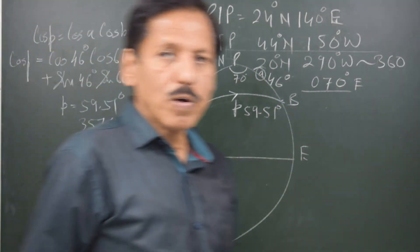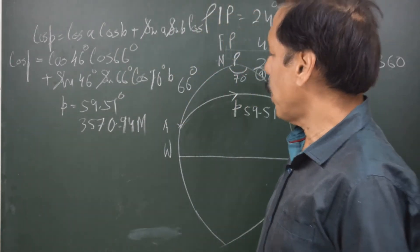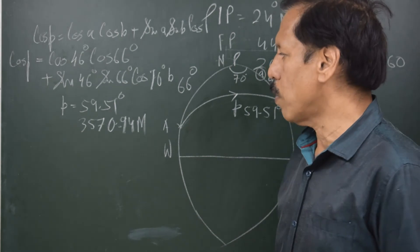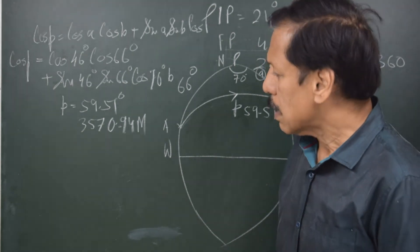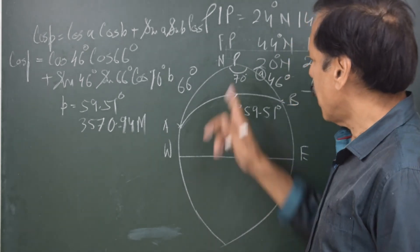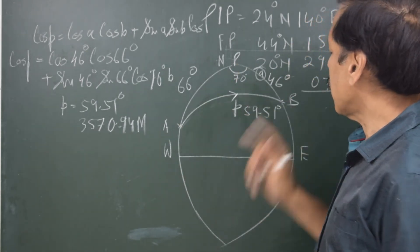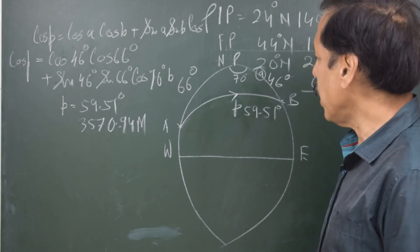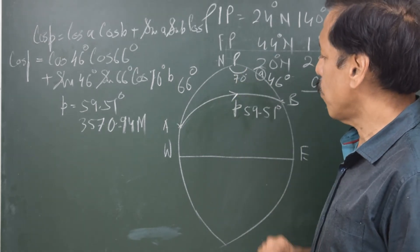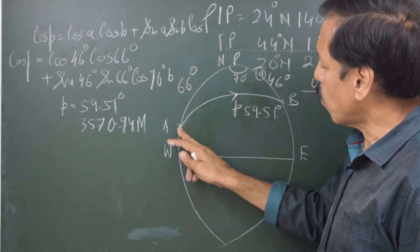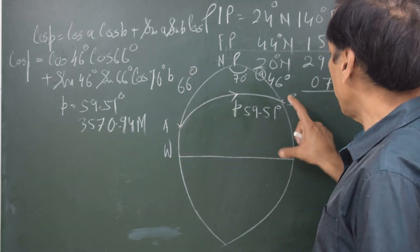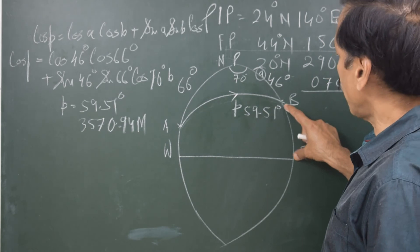We have obtained the great circle distance between places A and B. Small p equals 59.51 degrees, which equals 3570.94 nautical miles. We applied the cosine formula to the spherical triangle PAB, where we know the two sides and included angle. The co-latitude of A is 90 minus latitude of A, and similarly for B.